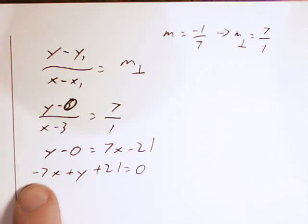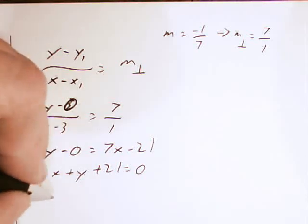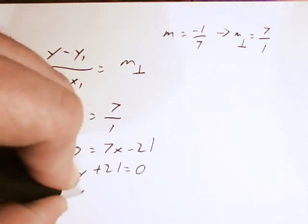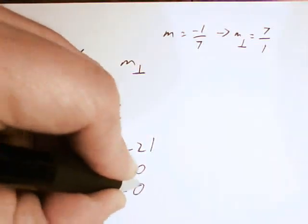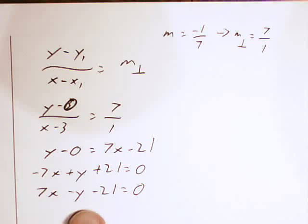I can't have a negative sign in front of my a value, so I'm going to multiply every term by negative 1. This is now the equation of the perpendicular bisector.